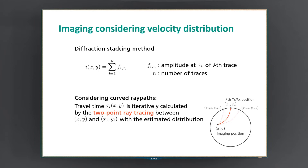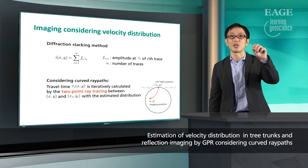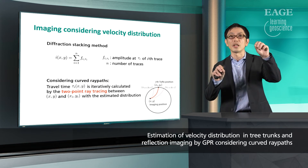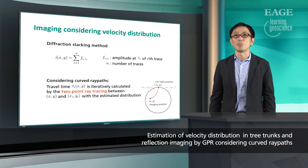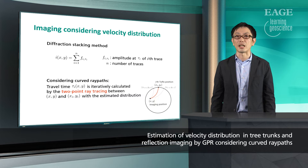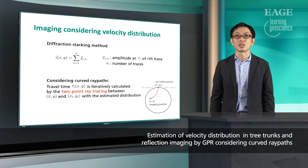If there is a velocity variation, ray paths are no longer straight lines and they are curved. But we now know the velocity distribution. So we have sampling position here and imaging position here, and curved ray paths between them can be calculated by using the two-point ray tracing algorithm, which is used for the estimation of velocity distribution. Then we can just sum amplitude at the travel time, as same as the constant velocity case.